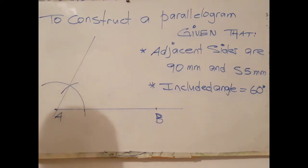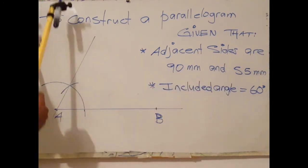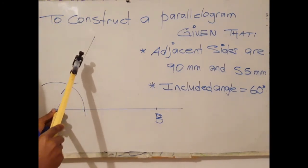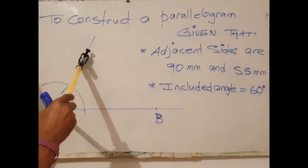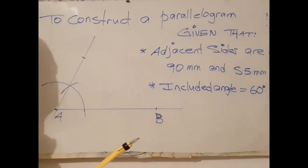That is my first angle. The next step is to measure 55 millimeters from A. 55 millimeters would be here, so this would be our point D.